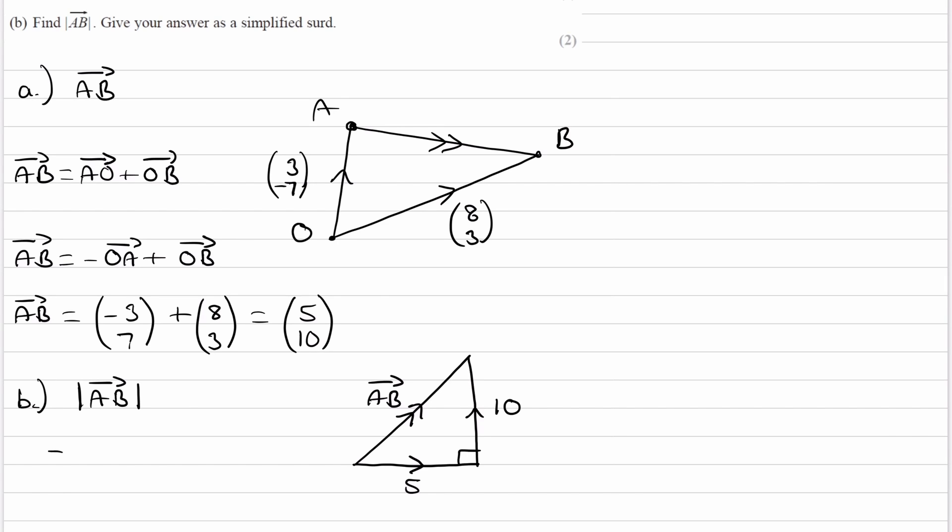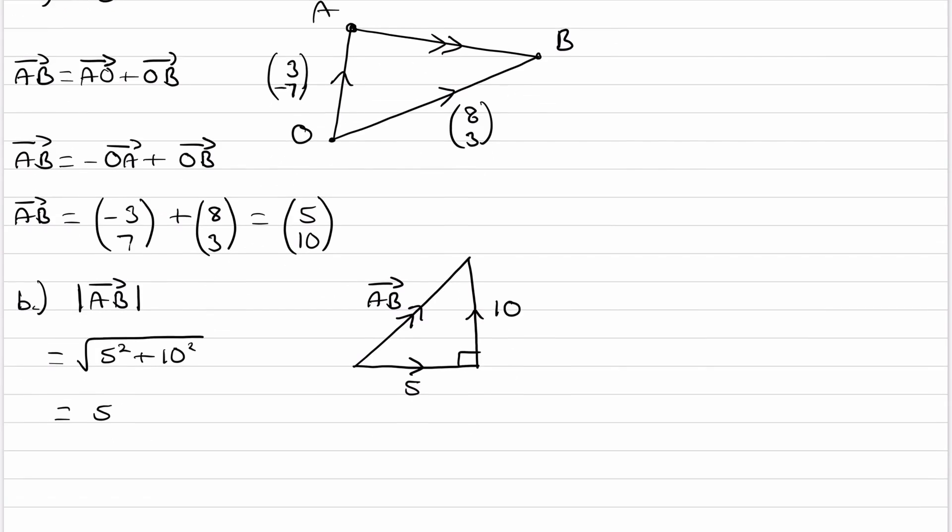So then AB is going to be equal to the square root of 5 squared plus 10 squared. And that will just be 5 root 5.